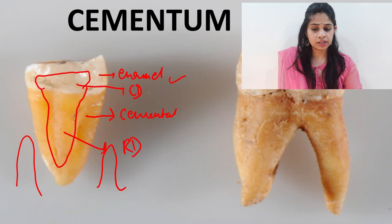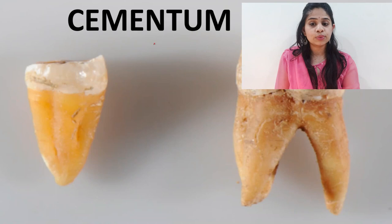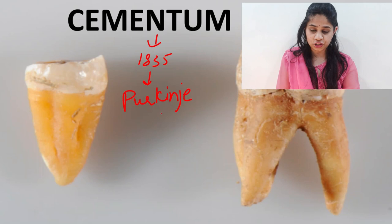And ultimately the alveolar bone. Cementum was first discovered in the year 1835 by two pupils of Purkinje. Coming on to the location of the cementum — cementum basically covers the anatomic tooth root.